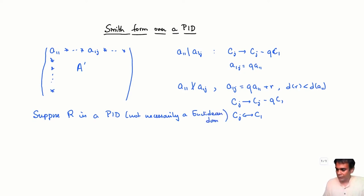So firstly, what I know is that if a_11 does not divide a_1j, then that means that a_1j is not in the ideal generated by a_11. That means that the ideal generated by a_11 and a_1j is strictly larger than the ideal generated by a_11.